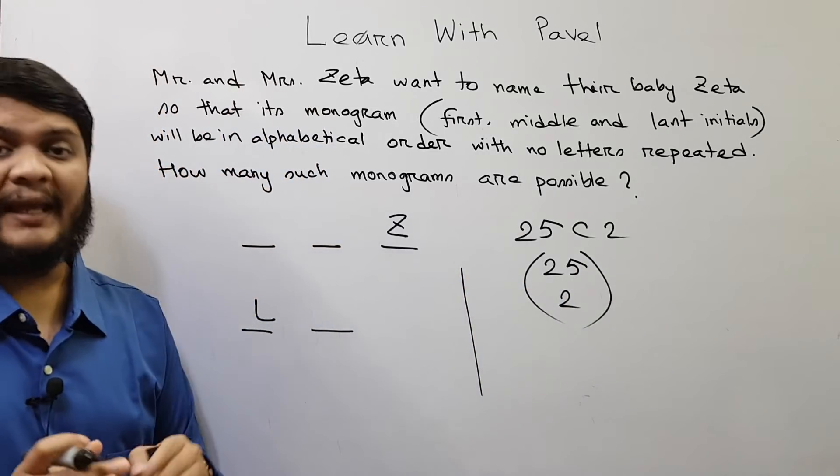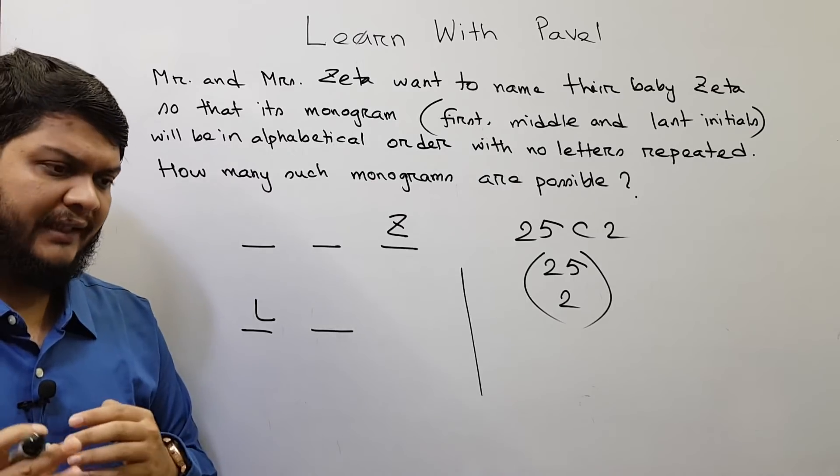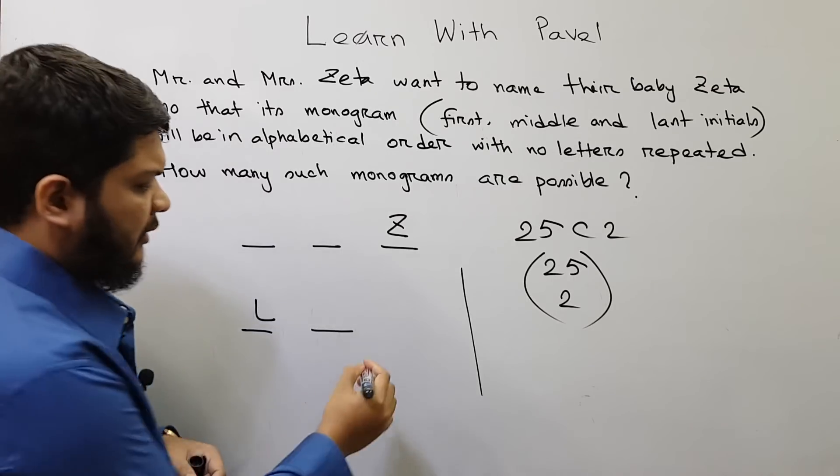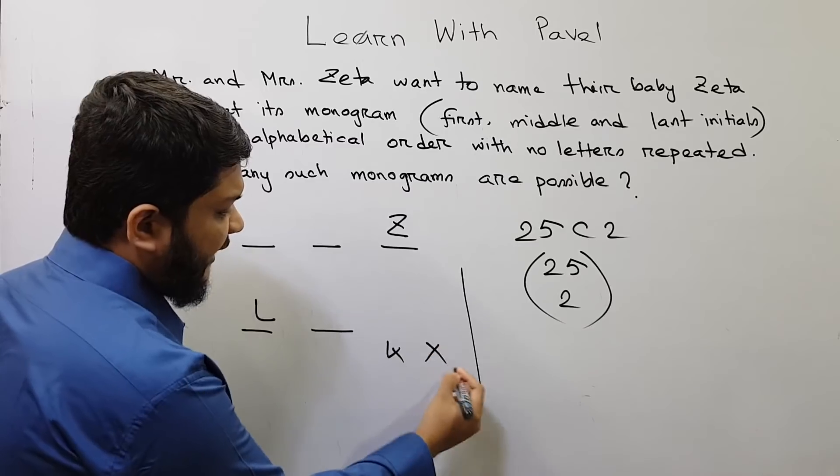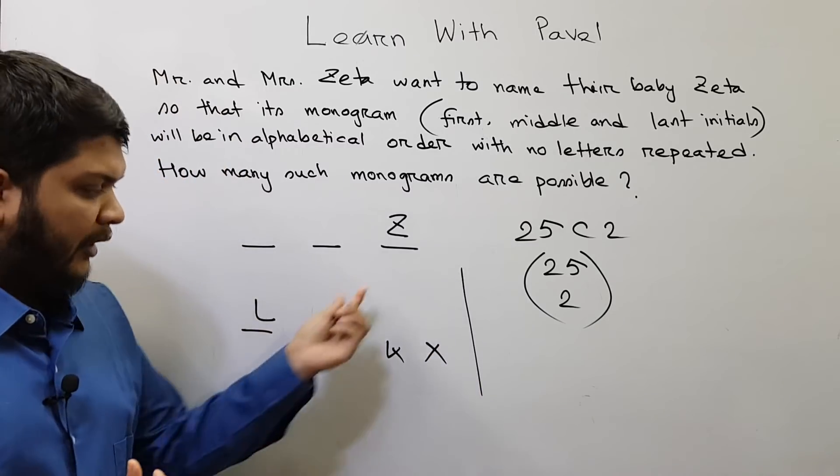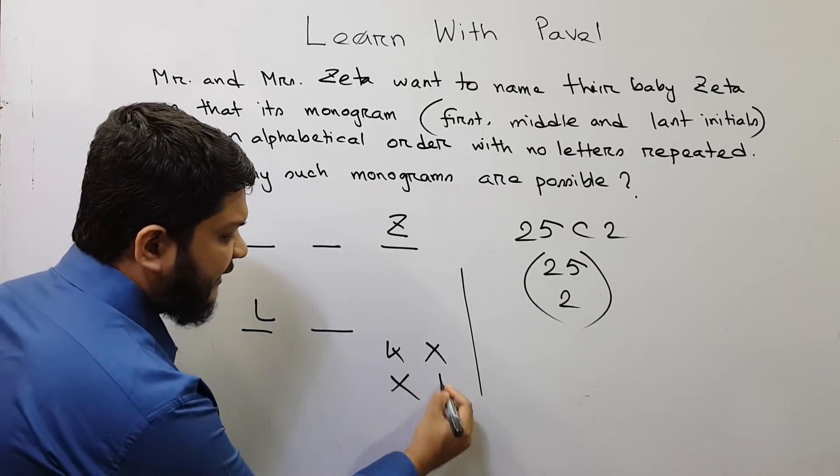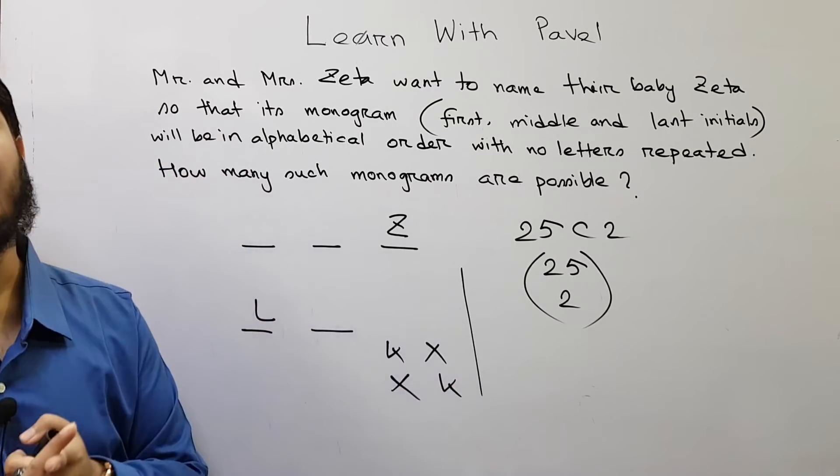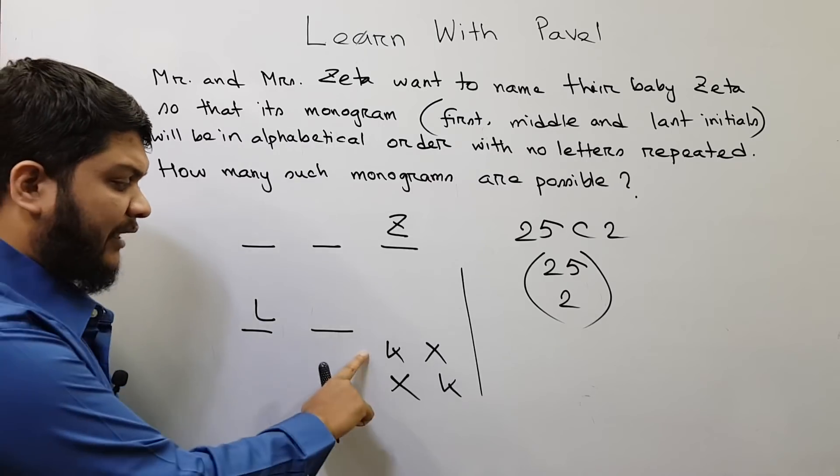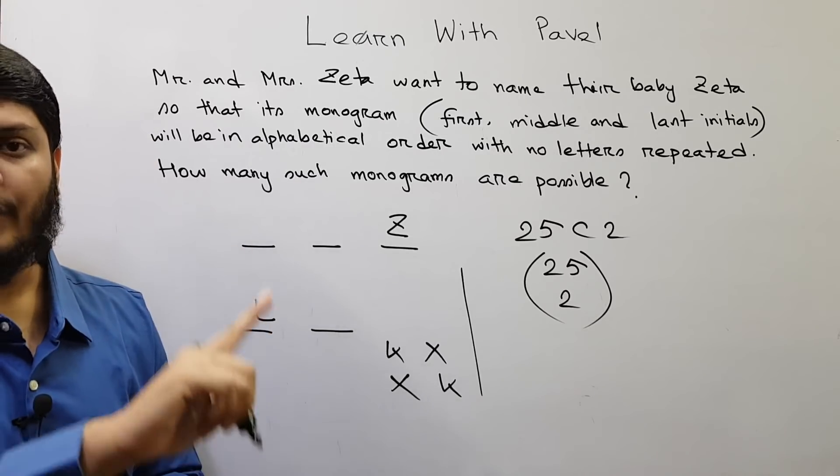Now for every selection, suppose you select two random letters say K and X. So for every selection there are two arrangements: one will be K, X, another will be X, K. So for every selection there is one arrangement which is in alphabetical order.